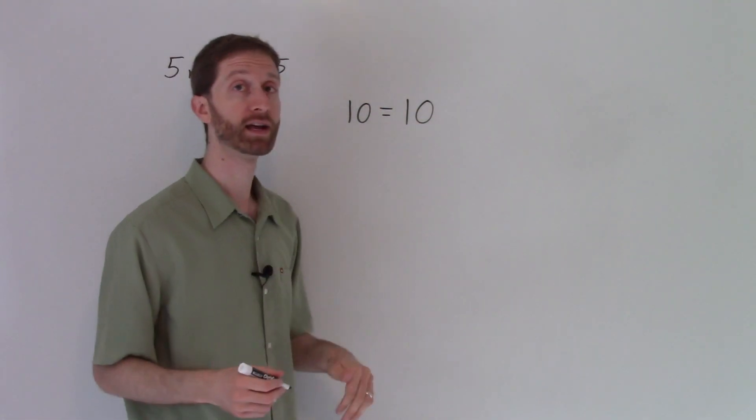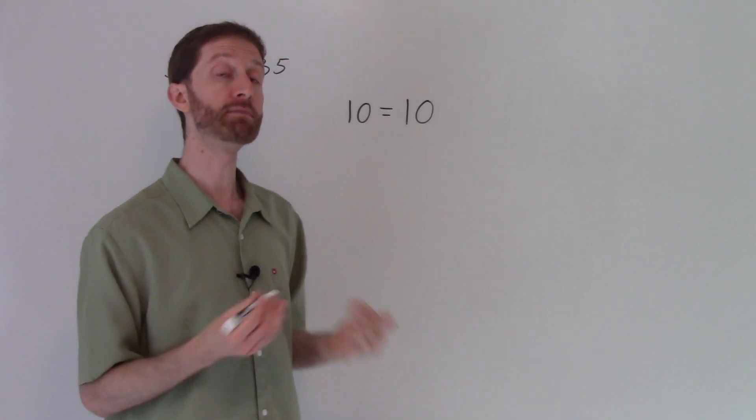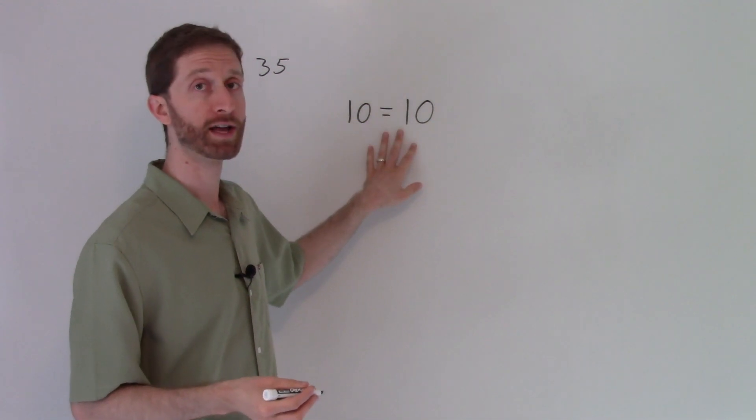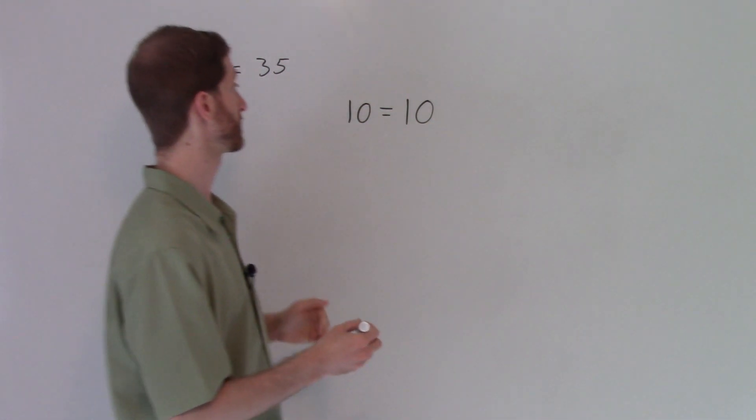So if I have 10 equal to 10, what the division property of equality says is I can divide the same number to both sides of a true equation, and I will then get a result of a true equation. So let's see if that works out.